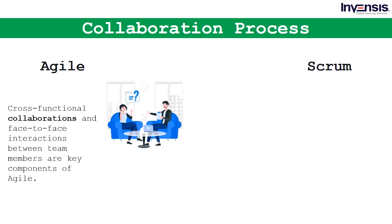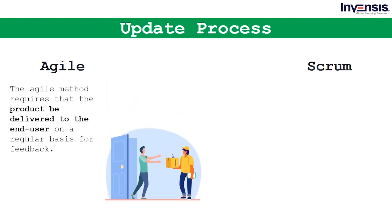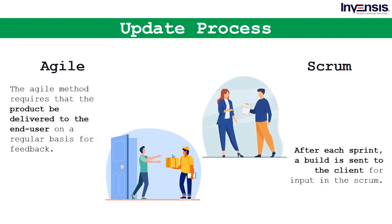The Agile technique fosters end-user feedback throughout the development process, making the ultimate product more useful. In Scrum, a daily sprint meeting is held to review and provide feedback on the project's progress. Leadership is extremely important in the Agile process, while Scrum encourages a cross-functional, self-organizing team. Cross-functional collaborations and face-to-face interactions are key components of Agile. In Scrum, collaboration is achieved through daily stand-up meetings where the Scrum master, product owner, and team members each have specific roles. The Agile method requires regular product delivery to end-users for feedback, while Scrum sends a build to the client after each sprint.